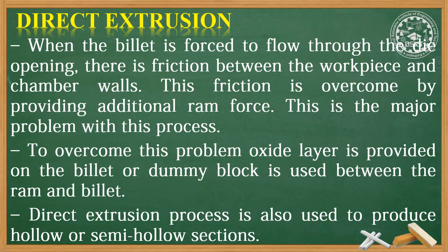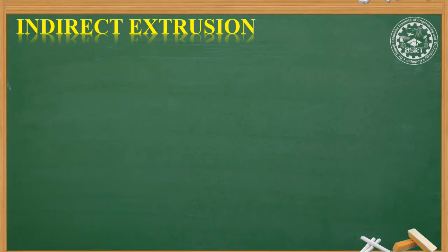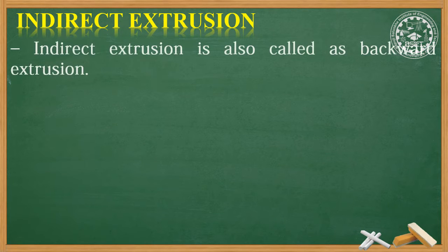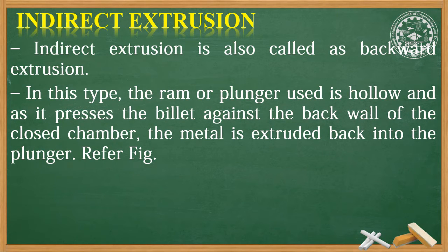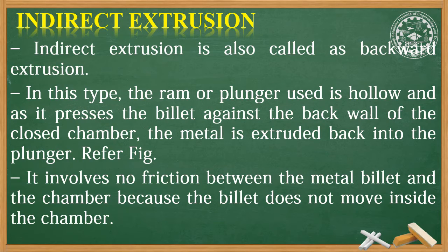Direct extrusion process is also used to produce hollow or semi-hollow sections. Now let us see indirect extrusion, which is also called backward extrusion. In indirect extrusion, the ram or plunger is hollow and as it presses the billet against the back wall of the closed chamber, it involves no friction between the metal billet and the chamber because the billet does not move inside the chamber.